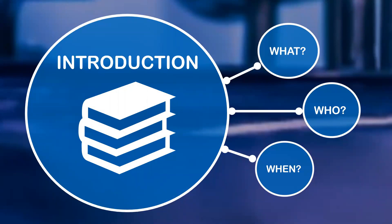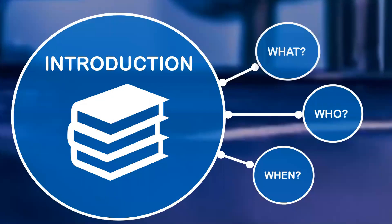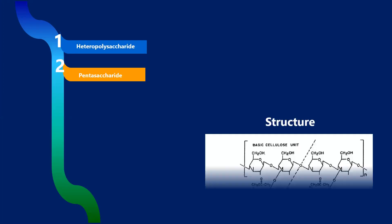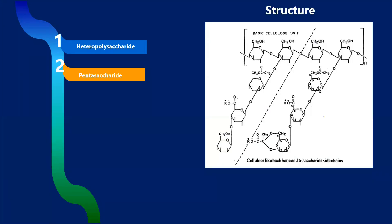What is xanthan? Xanthan is a heteropolysaccharide. It has five sugar residues as you can see in the image. The backbone is composed of d-glucose that are linked by an alpha 1-4 bond.